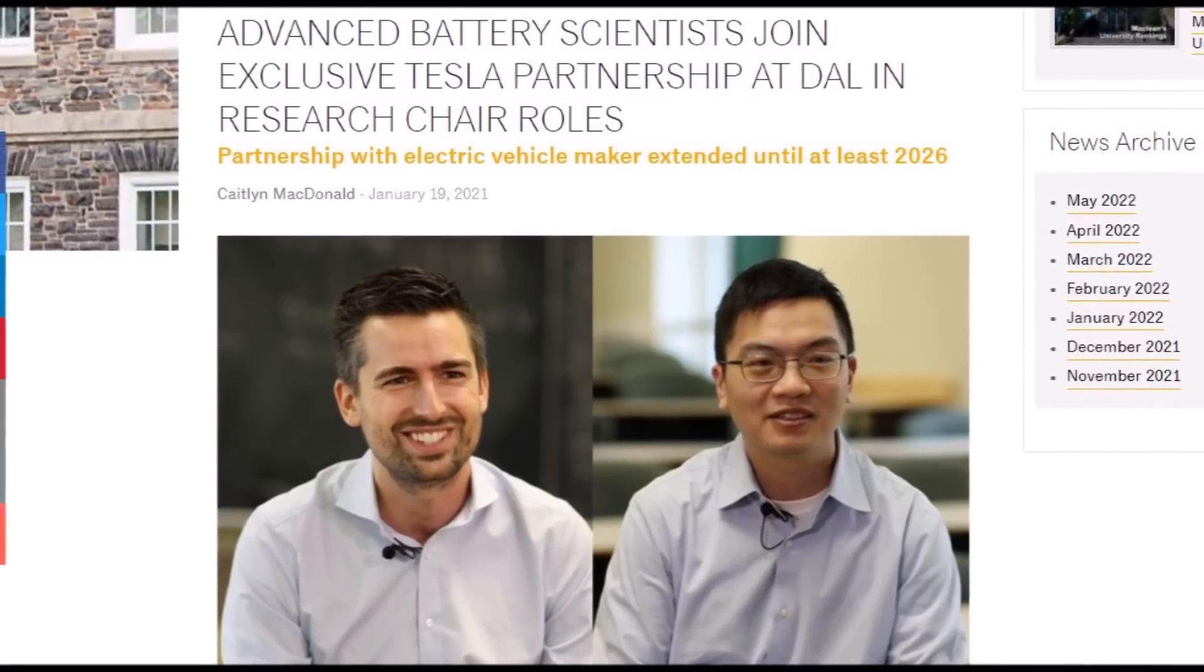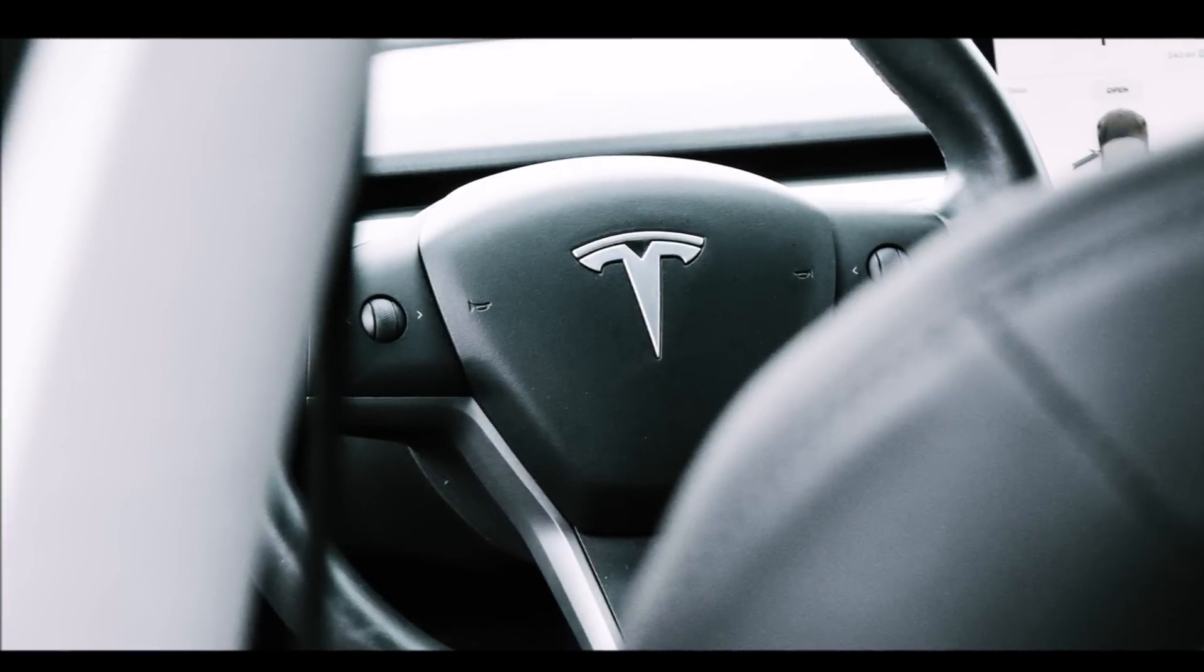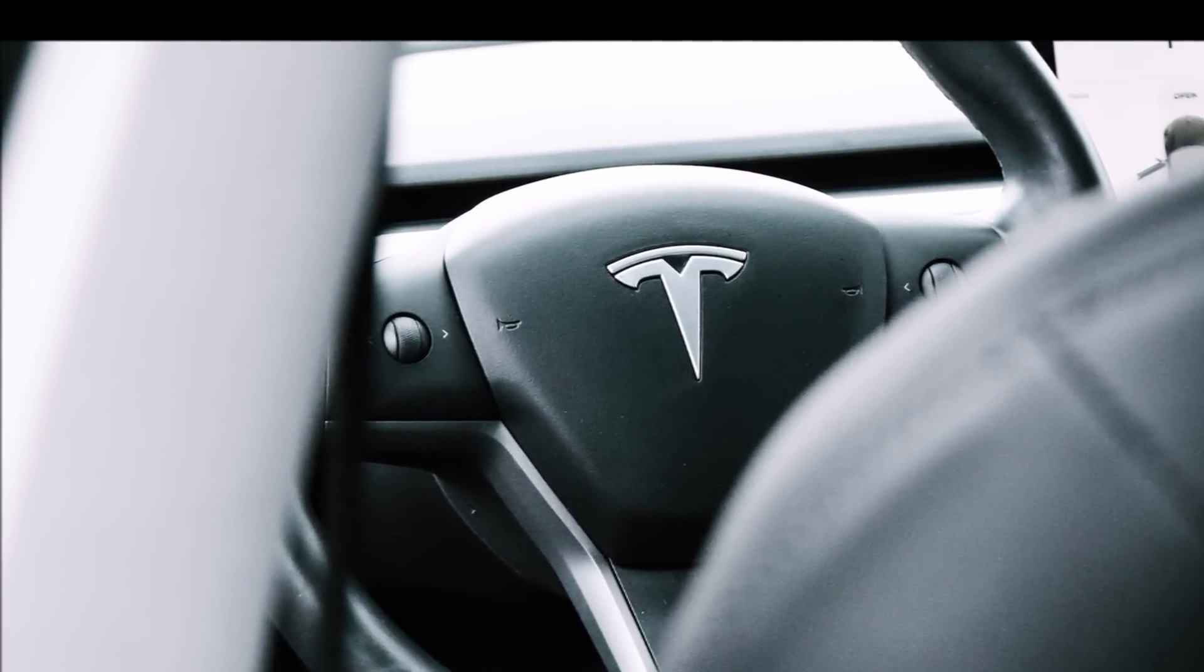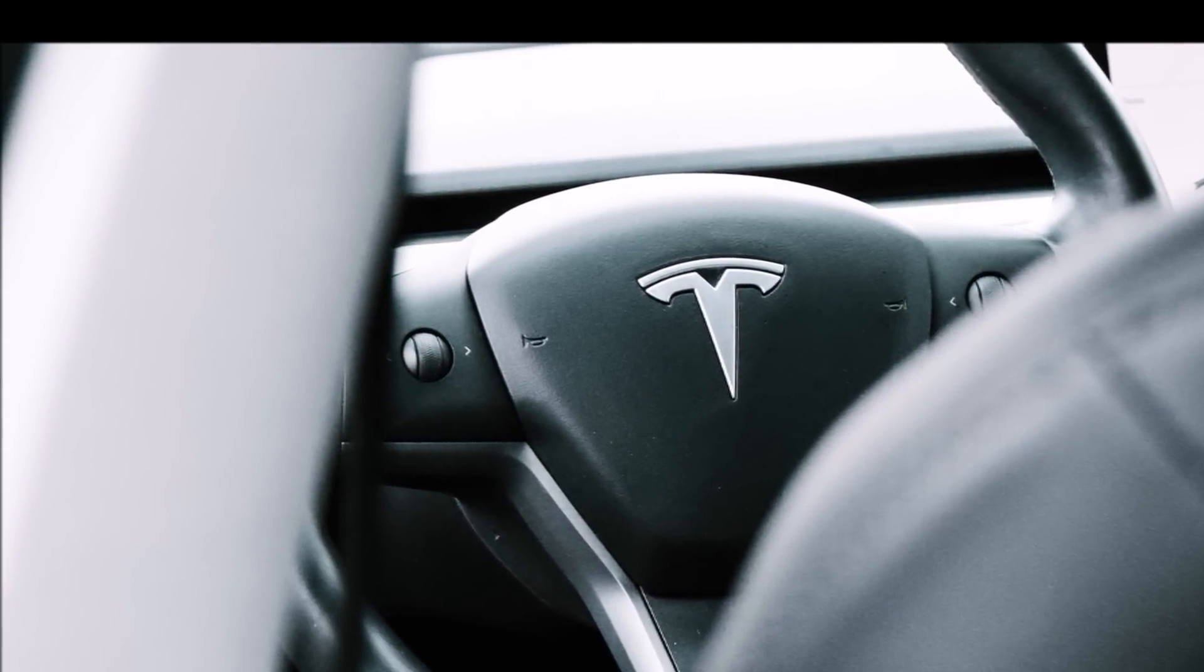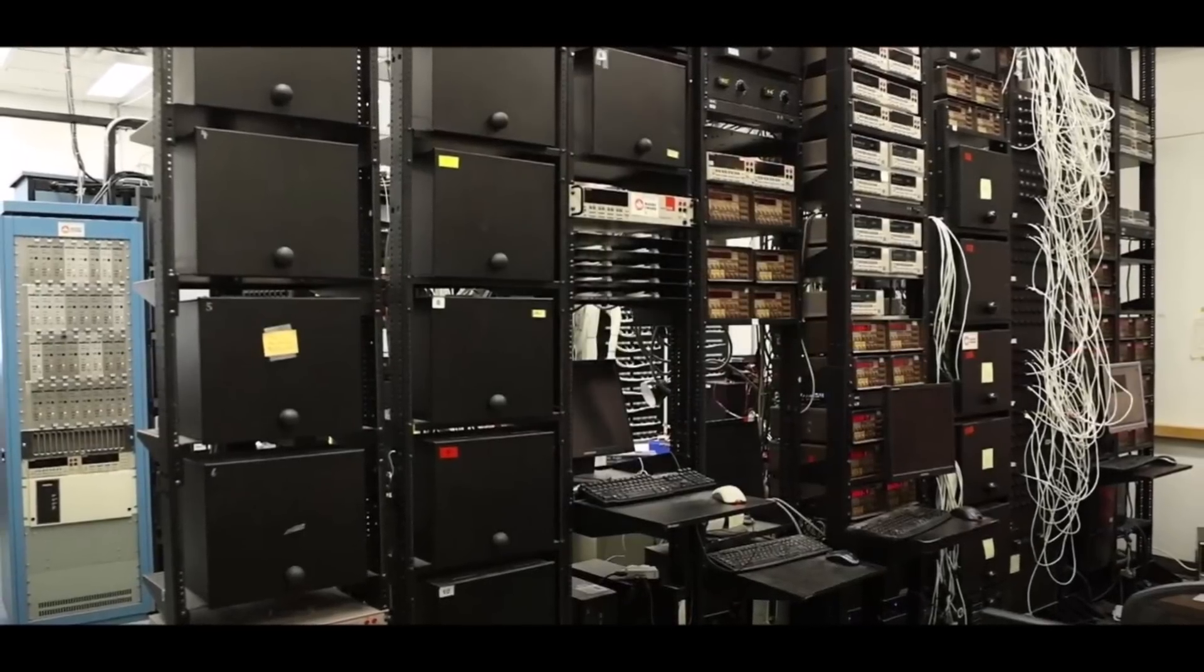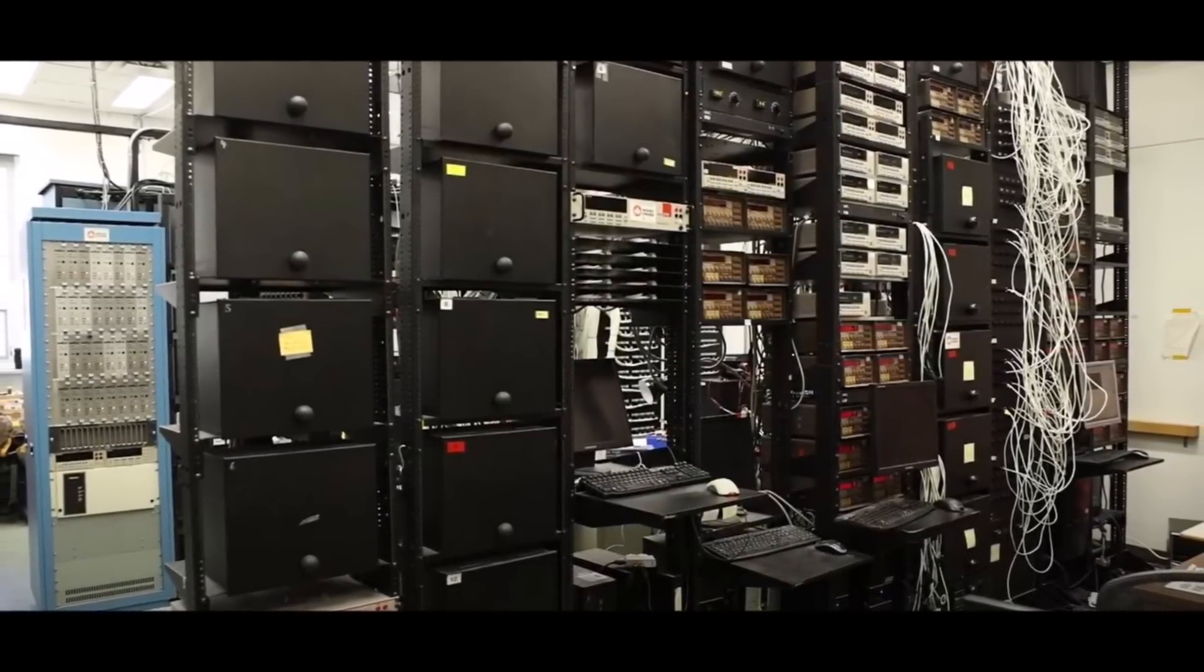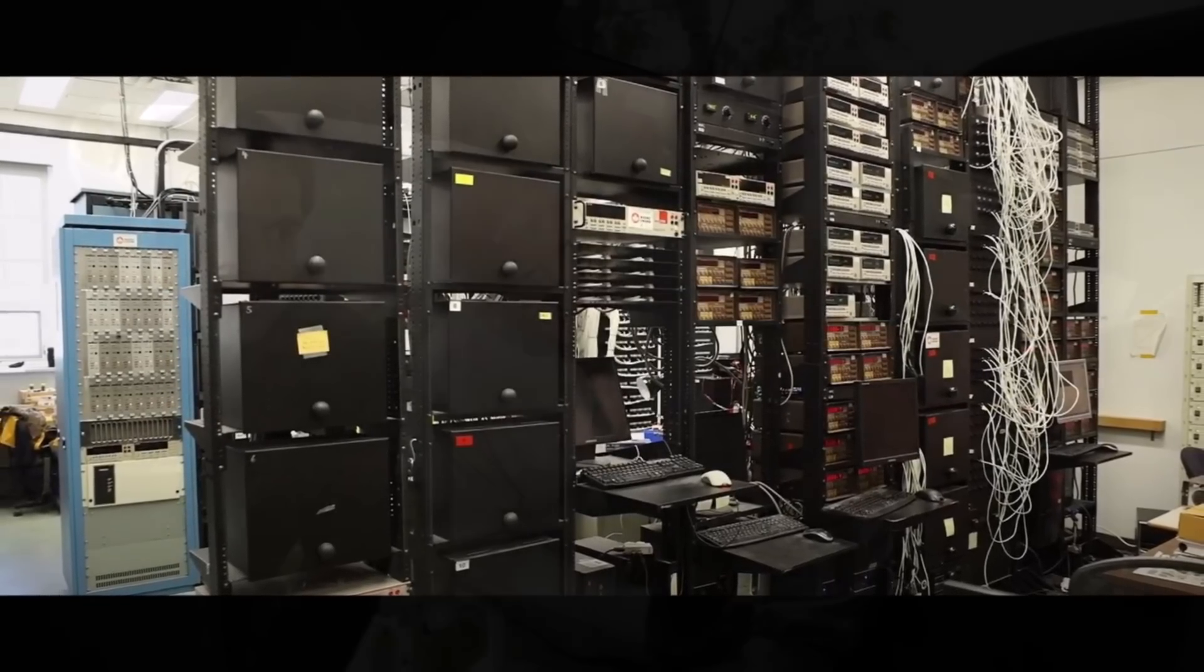His work now focuses mainly on potential increase in energy density and durability while also decreasing the cost. The group has already produced quite a few patents and papers on batteries for Tesla. The automaker recently extended its contract with the group through 2026 as it added two new leaders to be mentored by Dahn.